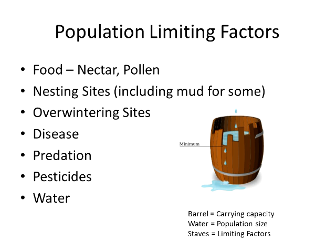Why are pollinators in trouble? If you look at population limiting factors using this barrel analogy — the barrel represents the ecosystem's carrying capacity, the water is the population size, and the staves are limiting factors: food like nectar and pollen, nesting sites, overwintering sites, disease, predation, pesticides, and water availability. Whatever the minimal stave is will stop the population from growing. This is what we need to think about as farmers when we're trying to enhance our populations.